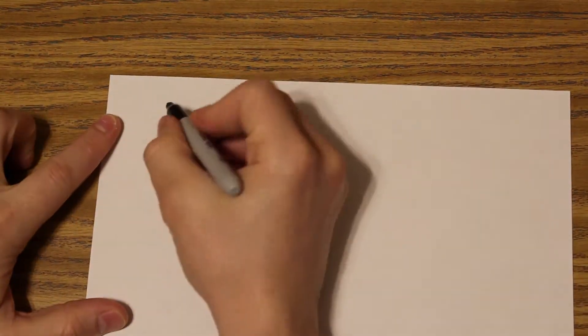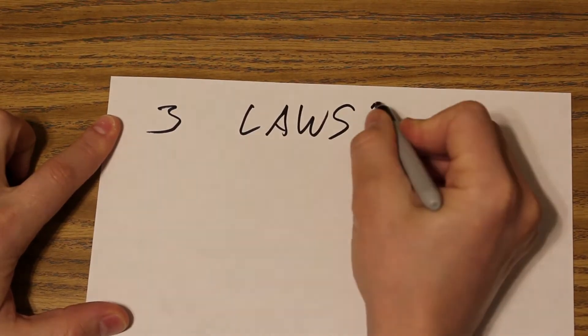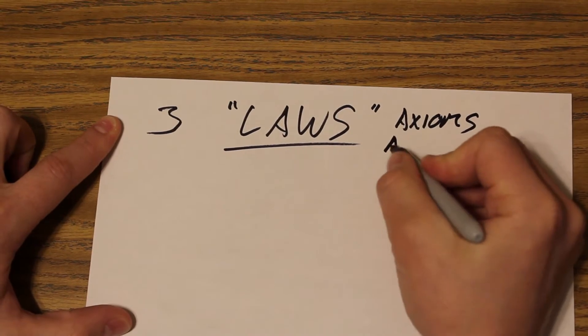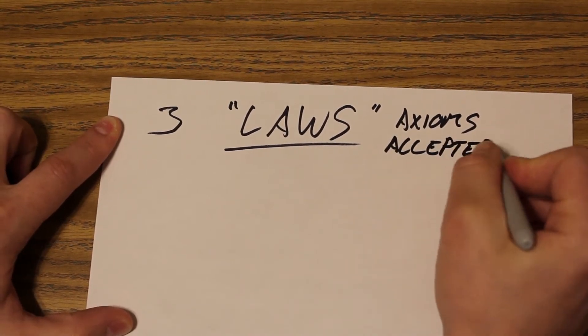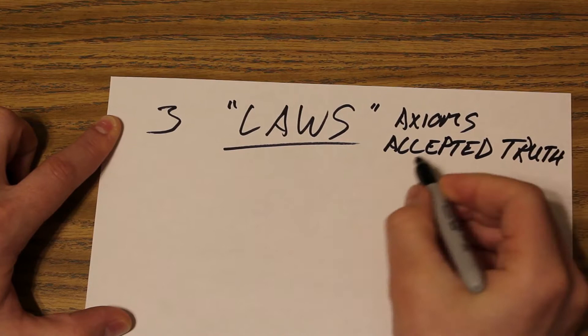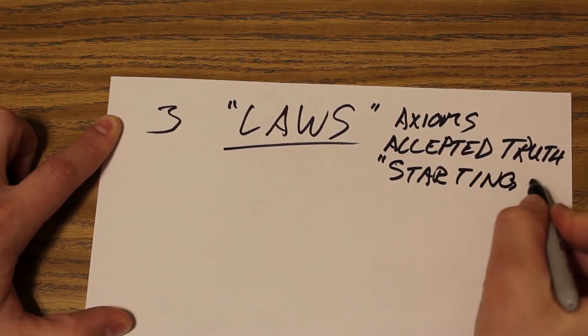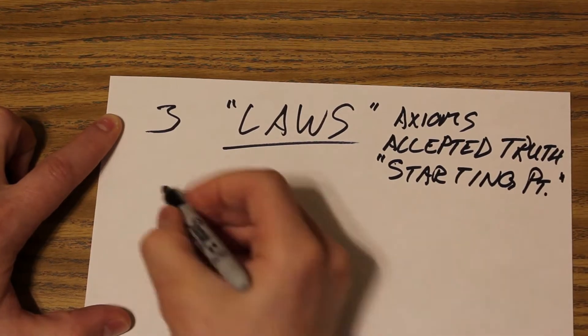What possible laws could we have? The very first of these three laws that we're going to go over is really easy. What is a law? It's an axiom, it's your accepted truth, your starting point. It's just whatever you would consider to be obvious—some kind of starting point where you can start your reasoning.